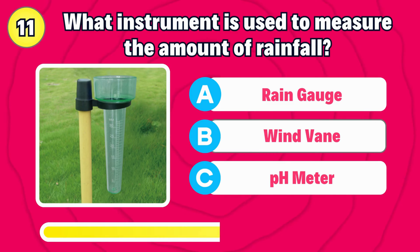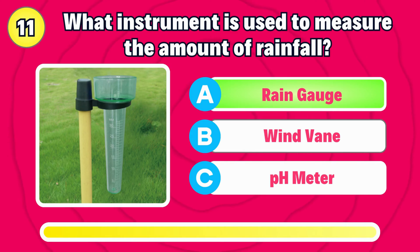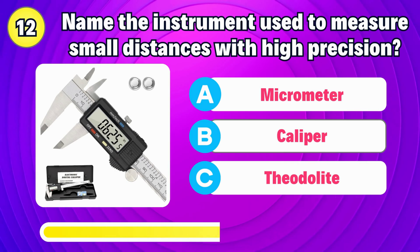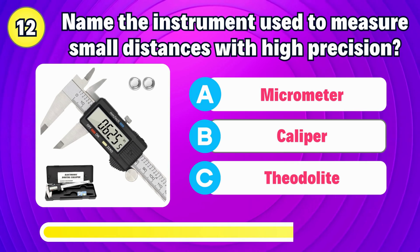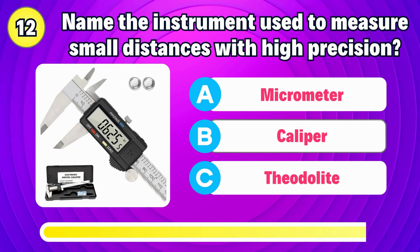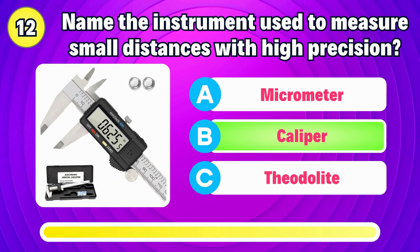What instrument is used to measure the amount of rainfall? The answer is rain gauge. What is the name of the instrument used to measure small distances with high precision? That's right, it's caliper.